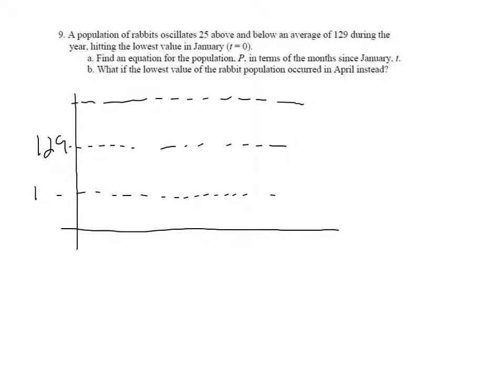They've told us that the average is 129 rabbits. Since it oscillates 25 above and below that number, I'm going to subtract 25 from the average, which gives me 104, and add 25, which gives me 154.